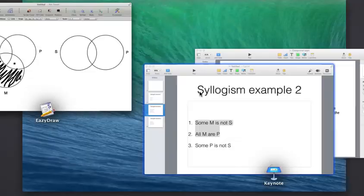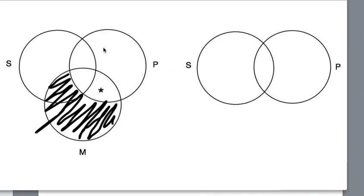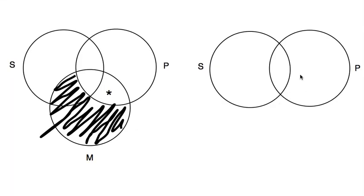All right, so let's go back to our syllogism and diagram the conclusion now. Some P is not S. Some P is not S. All right. So that means there's something that's in the category of P, but not in the category of S.